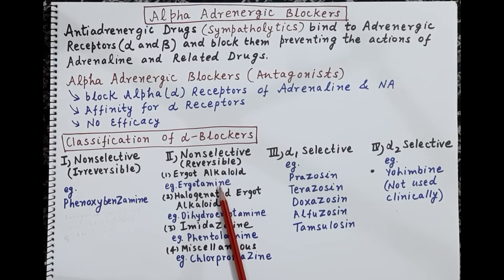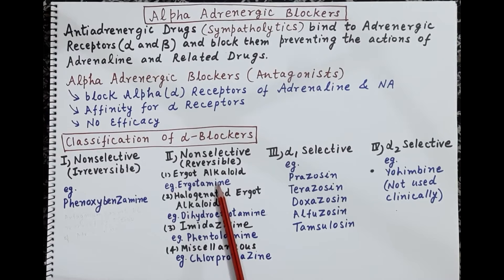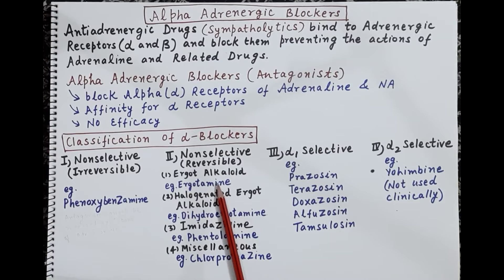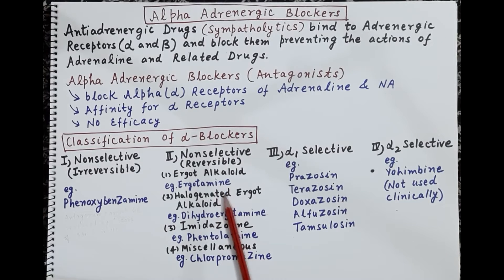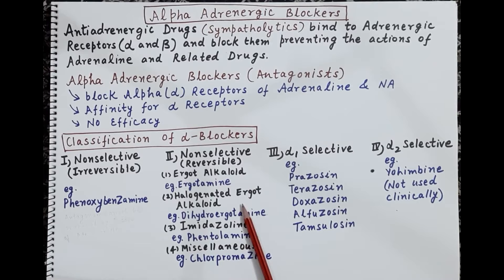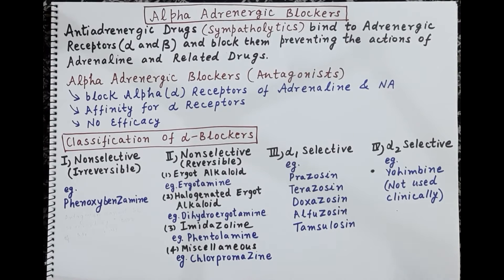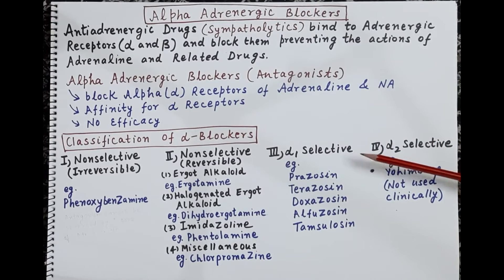Non-selective reversible alpha blockers are capable of blocking both alpha-1 and alpha-2 receptors. However, the antagonism is reversible — it can be reversed by increasing the concentration of adrenaline at the synaptic cleft. In this category we have ergot alkaloids such as ergotamine, halogenated ergot such as hydroergotamine, imidazolines such as phentolamine, and miscellaneous drugs such as chlorpromazine.